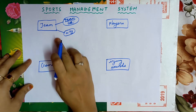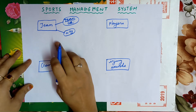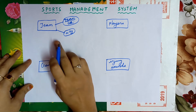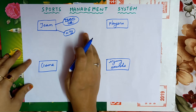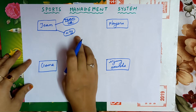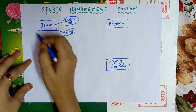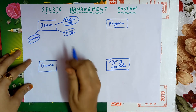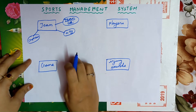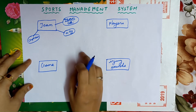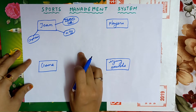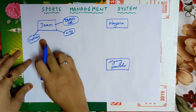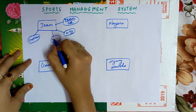A team belongs to a particular city — for example, Chennai or Coimbatore. So city is one important attribute. The next attribute is captain: in a team of 10 members, one player will be the captain, so captain is an important attribute.